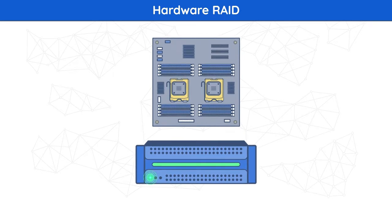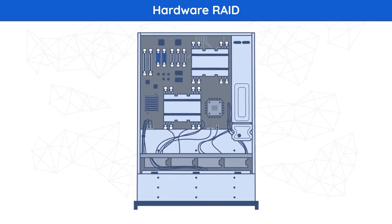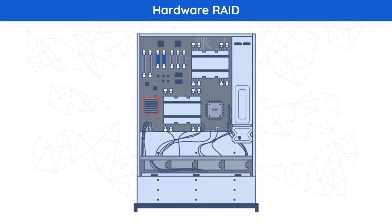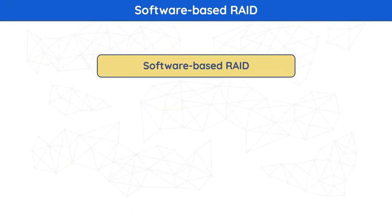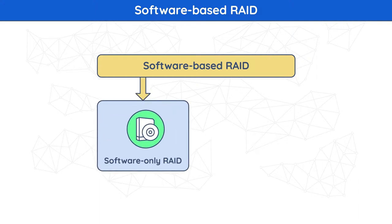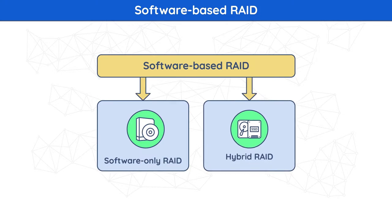RAID on chip: a single chip on the motherboard integrates the host interface, I/O interfaces for HDDs, the RAID processor, and a memory controller. Software-based RAID delivers RAID services from the host and comes in two flavors: purely software-defined running from the OS, and hybrid software that contains a hardware component to relieve the load on the CPU.